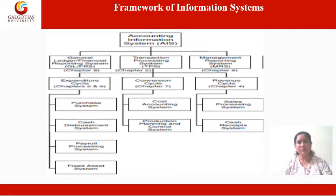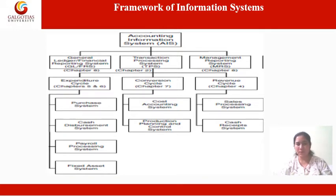Accounting information subsystems process financial as well as non-financial transactions that directly affect the processing of financial transactions. For example, changes to customers' names and addresses are processed by the accounting information system to keep the customer file current. Although not technically financial transactions, these changes provide vital information for processing future sales to the customers. The accounting information system is composed of three major sub-systems, including the transaction processing system which supports daily business operations with numerous reports, documents and messages for users throughout the organization.